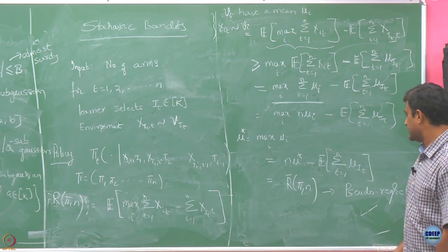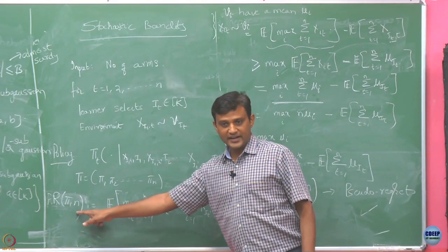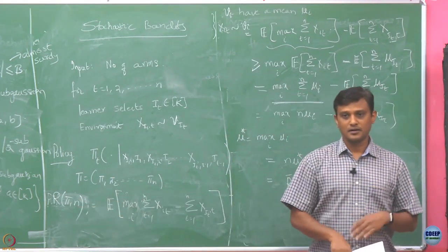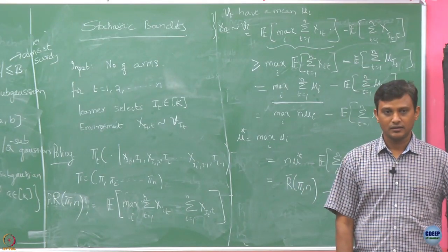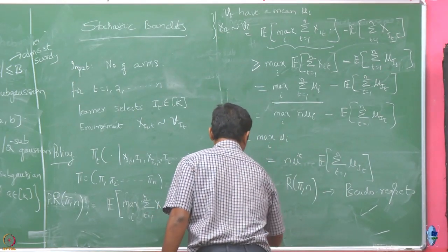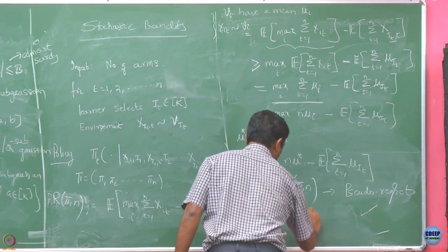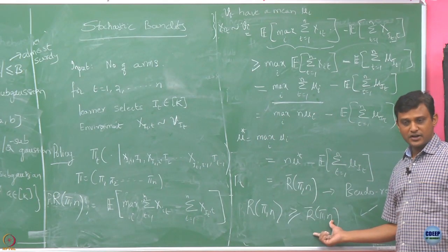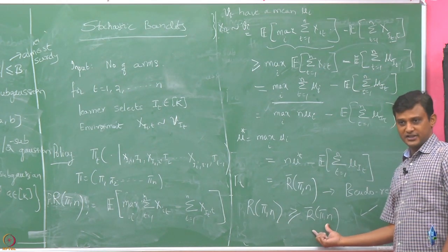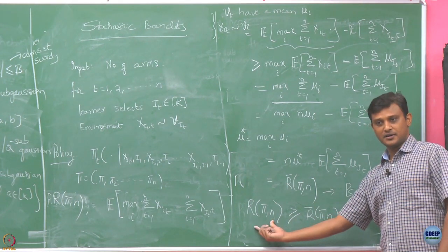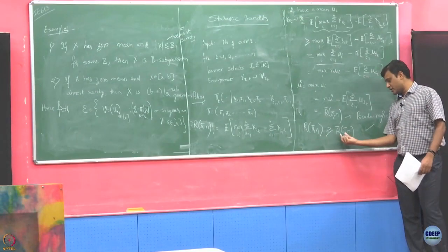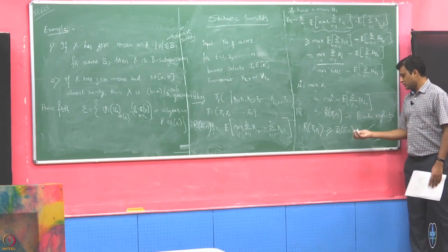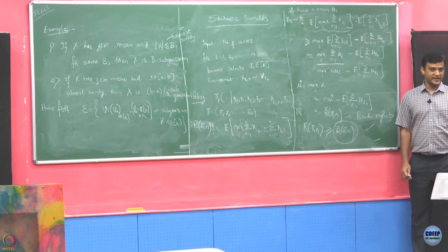We call this quantity the pseudo-regret, denoted r-bar of pi and n. The pseudo-regret is a lower bound on the actual regret. If we give an upper bound on the pseudo-regret, it will not necessarily be an upper bound on the actual regret. But henceforth we will focus on and try to bound this pseudo-regret, and we are interested in policies pi such that the pseudo-regret divided by n goes to 0 — that is, sub-linear regret.